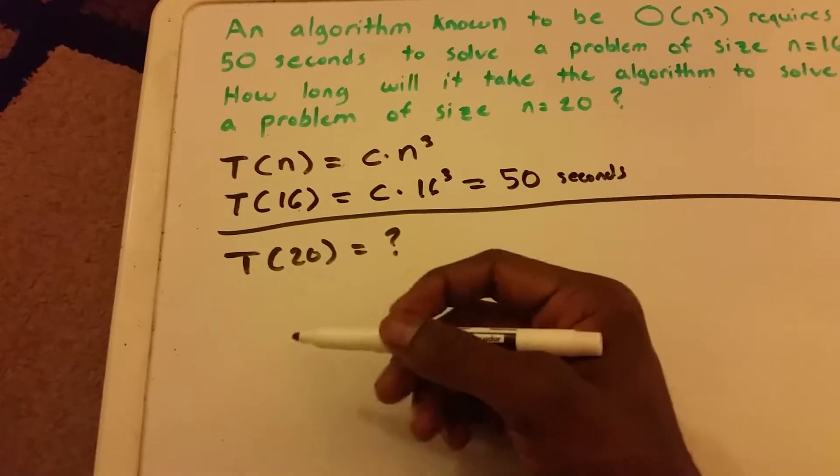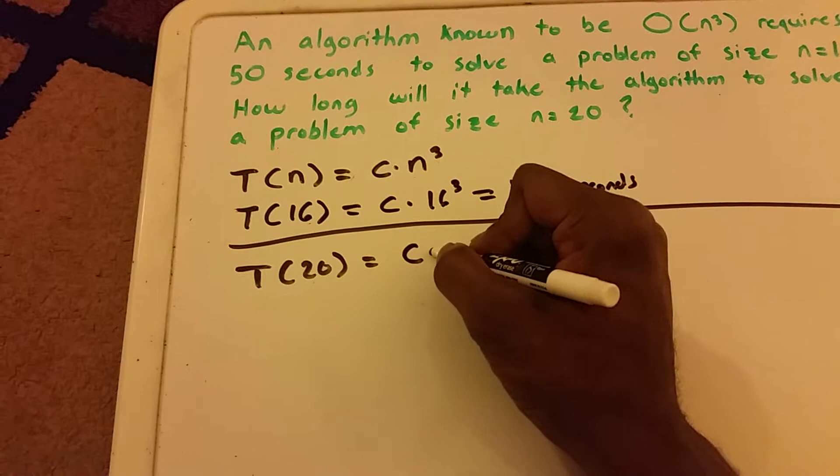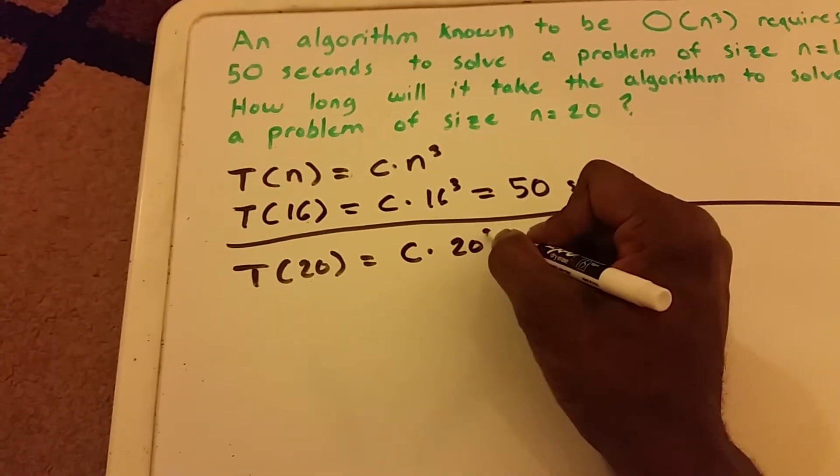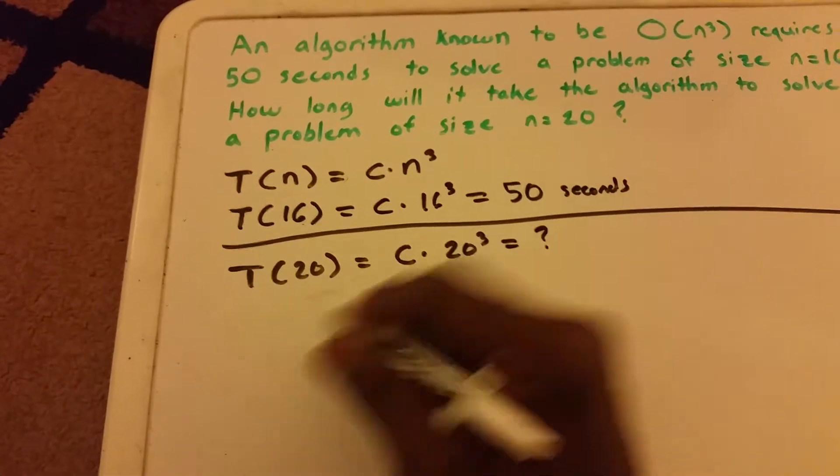So we can set up T of 20 the same way. We know that T of 20 is equal to C times 20 cubed. And we still don't know what this answer is yet.